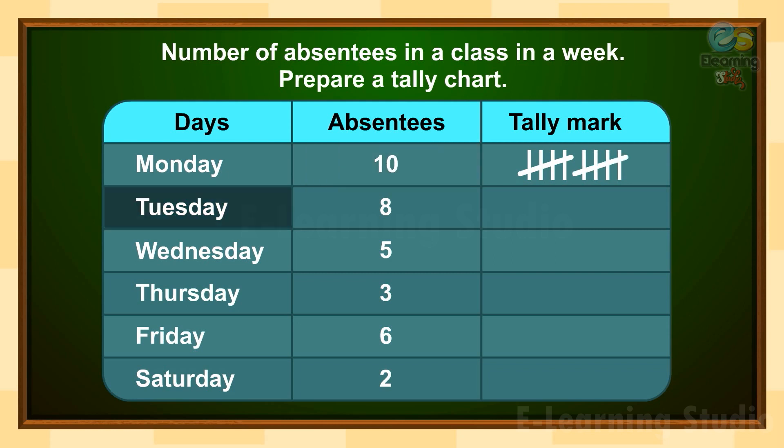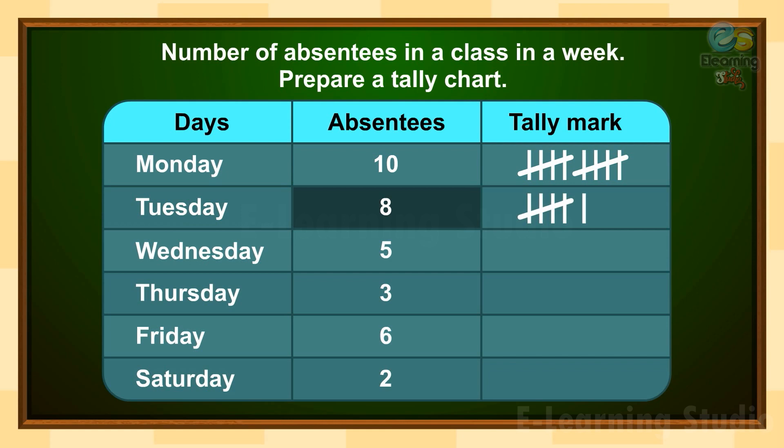The next day is Tuesday and the number of absentees are 8. We will draw a group of 5 tally marks and then 3 more vertical lines for 6, 7, and 8.